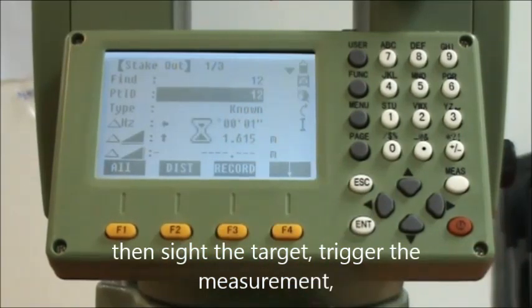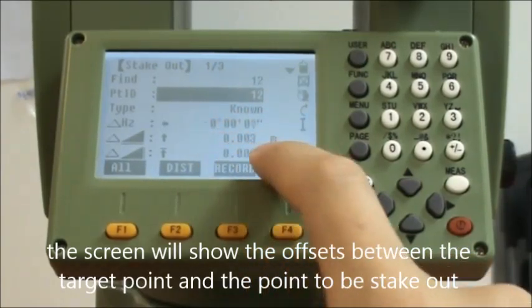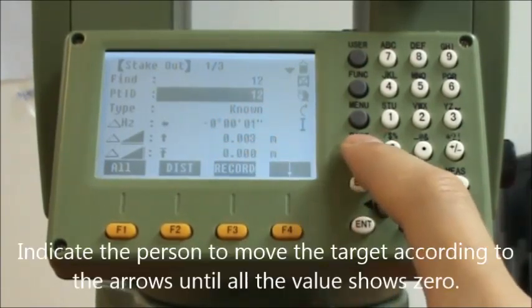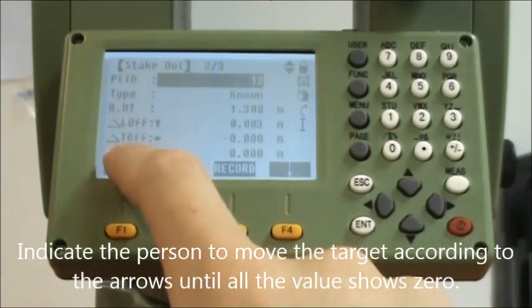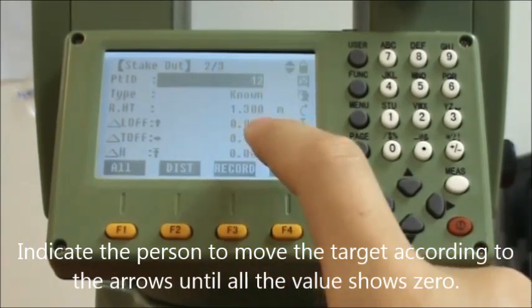Then sight the target, trigger the measurement. The screen will show the offsets between the target point and the point to be staked out. Indicate the person to move the target according to the arrows until all the values show zero.